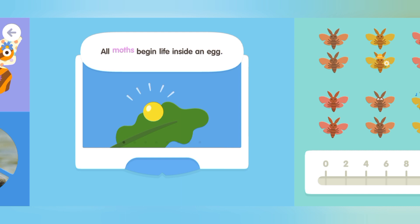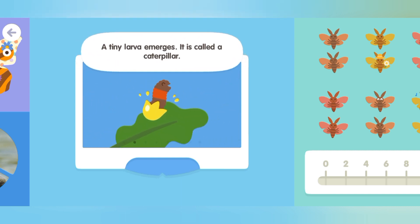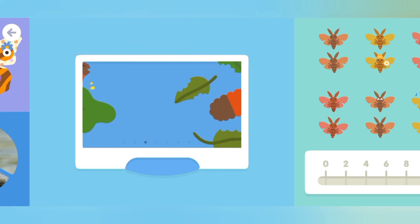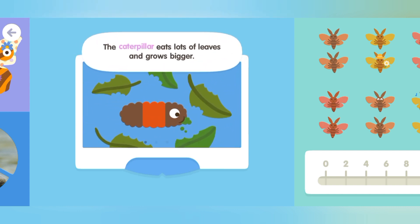All moths begin life inside an egg. A tiny larva emerges — it is called a caterpillar. The caterpillar eats lots of leaves and grows bigger.